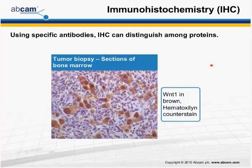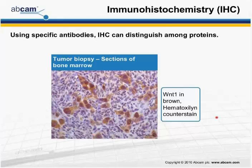Here we're looking at a tumor biopsy section — this is bone marrow — and here in brown you see a stain for the protein Wnt1. And of course, this is the hematoxylin counterstain for the nuclei. You can clearly see that the protein is expressed in portions of the tissue but not in the whole tissue. So you get this local information that you don't get from histochemistry.